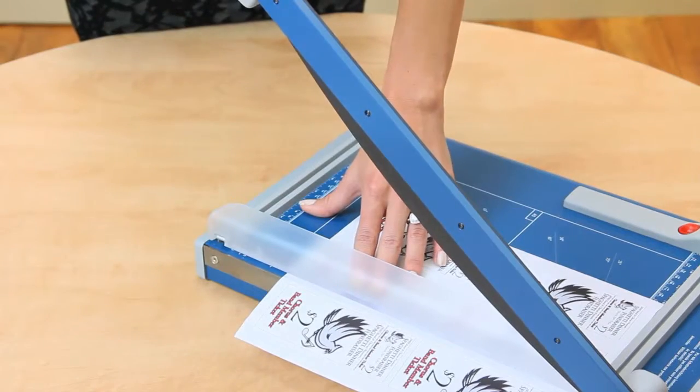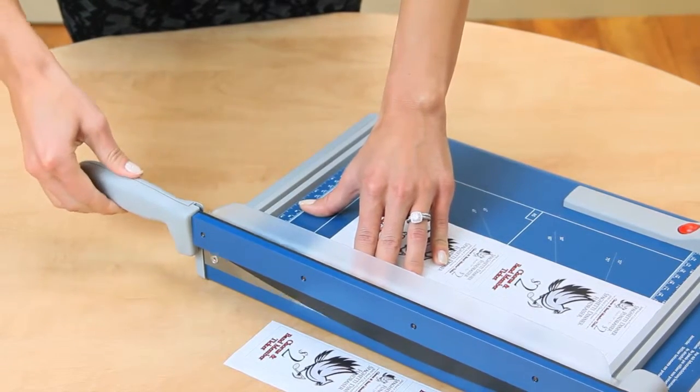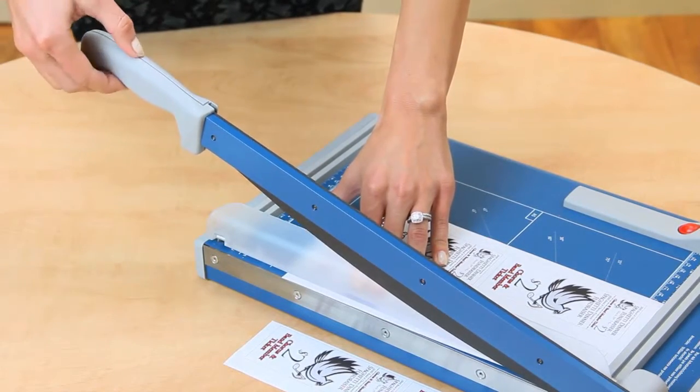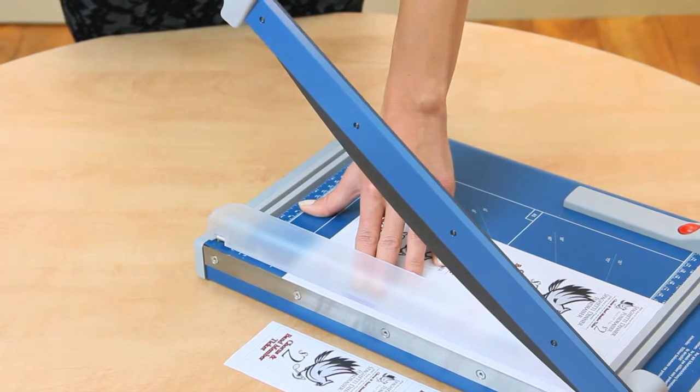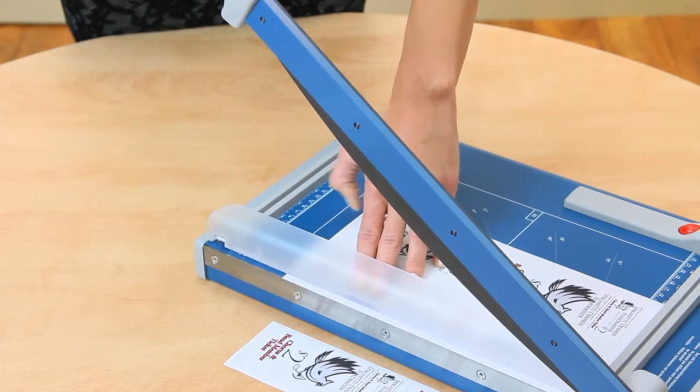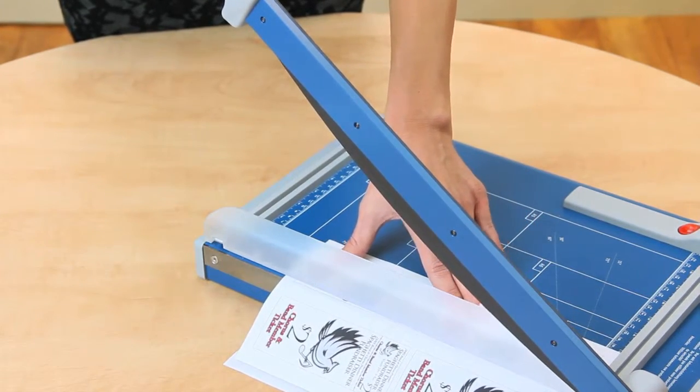For safety, the trimmer's innovative spring system holds the blade at any angle and restricts it from falling down unexpectedly. The manual hand clamp prevents paper from shifting and doubles as a protective guard to keep fingers safe.